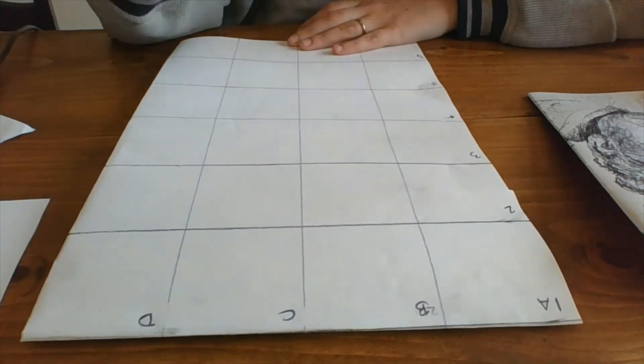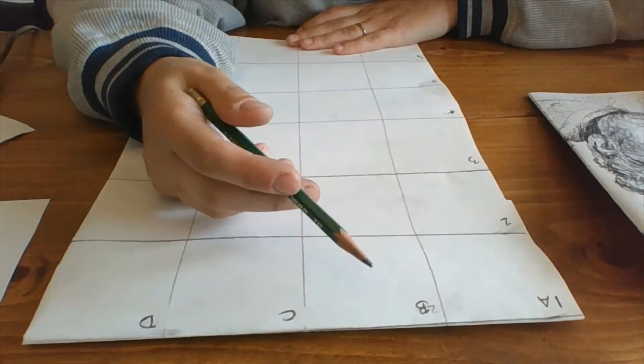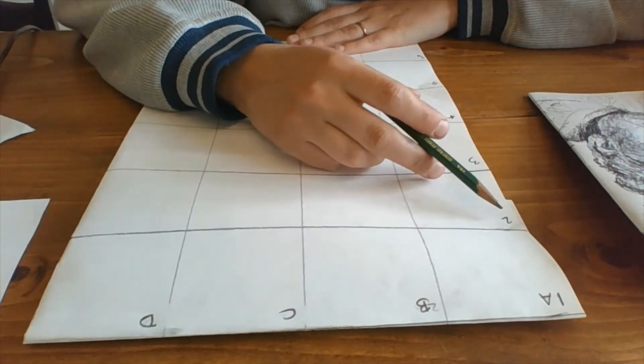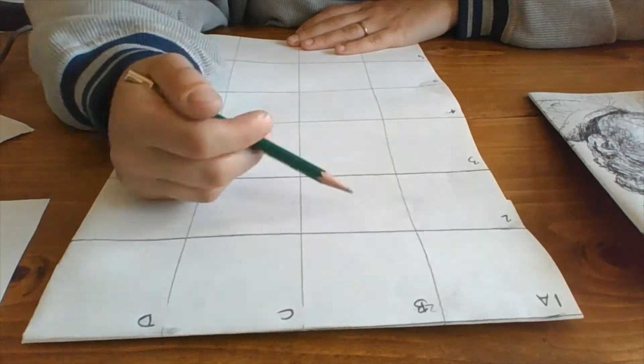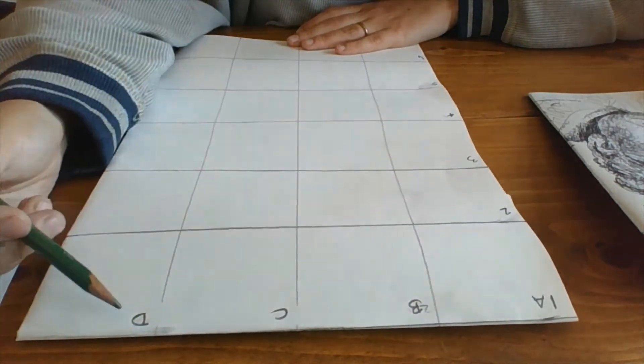All right, now we kind of have this naming system where we can say this is Box 2B right here, 2C, 2D.